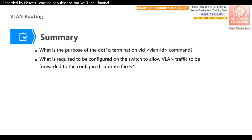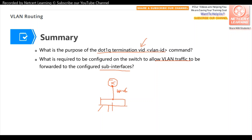There are two review questions. First: what is the purpose of the dot1Q termination VID command? This command is used for single-arm routing, configured on the router to assign the sub-interface to a certain VLAN. Second: what is required to configure on the switch to allow VLAN traffic to be forwarded to the configured sub-interface? The physical connection between the switch and the router must be configured as a trunk port, and all VLANs that need to be routed must be allowed to pass on that link.